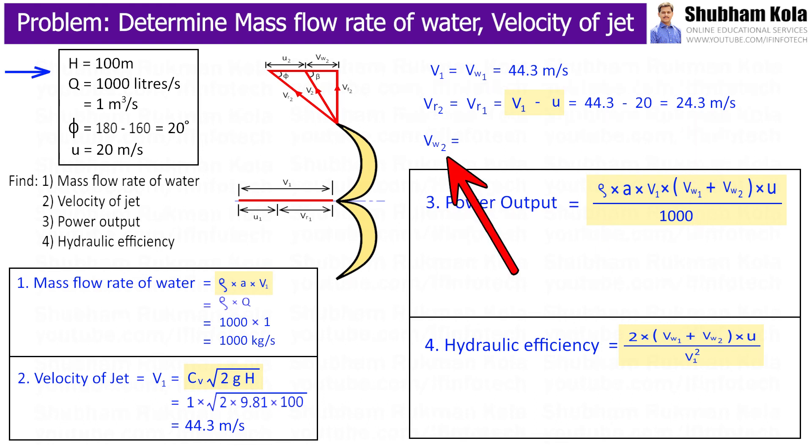Now, to calculate Vw2, we have the formula Vr2 cos phi minus small u, where phi is 20 degrees and small u is given in the problem. And I will put the calculated value of Vr2. Therefore, by substituting all these values, we got Vw2 as 2.84 m per second.